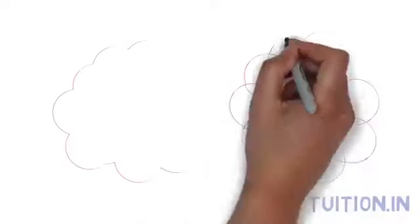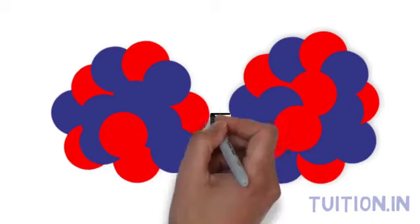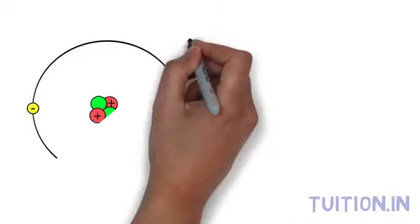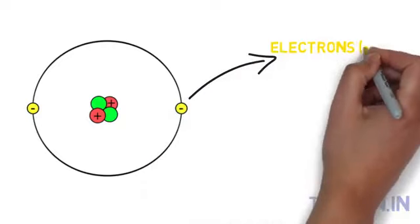The number of protons in an atom determines the element's physical properties. No two elements have the same number of protons. Revolving around the nucleus like the planets around the sun are the negatively charged particles called electrons.